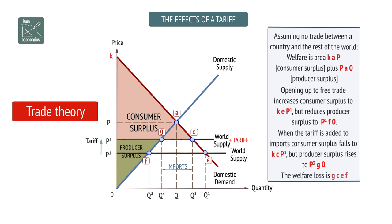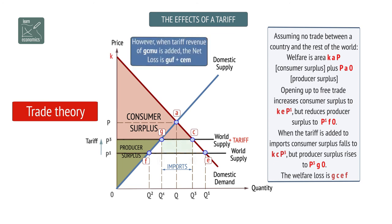However, when tariff revenue of GCMU is added, the net loss is GUF plus CEN.